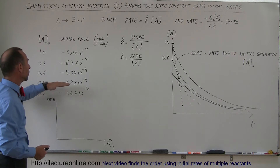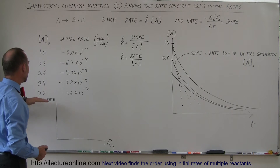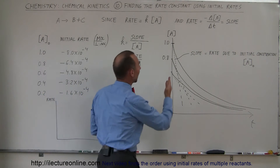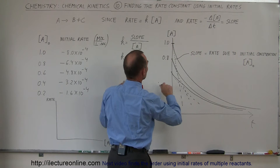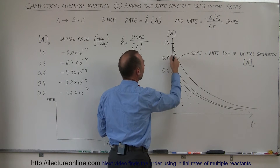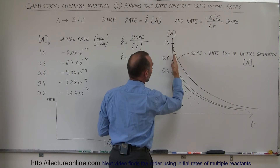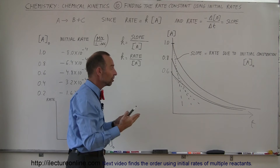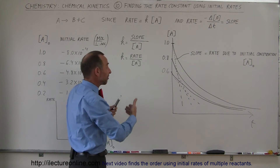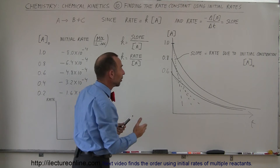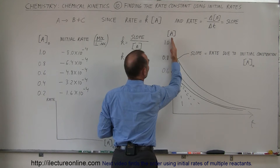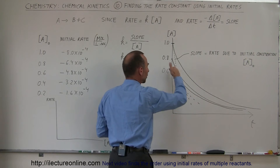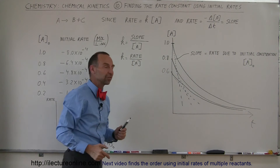Then we go down to 0.4 and measure the initial reaction rate, and 0.2 and measure the initial reaction rate. As we start with lower and lower concentrations of the reactant, we can see that our initial slope is less and less steep, which means that our initial rate of the reaction is smaller and smaller because we have less of the reactant present. We measure this initial reaction rate — that would be the dotted line right here — and you can see that the slope of the dotted line becomes less and less steep.